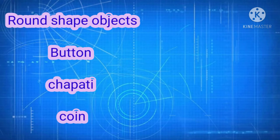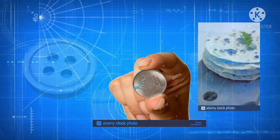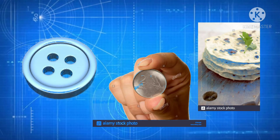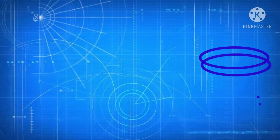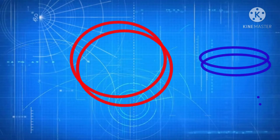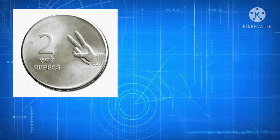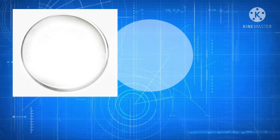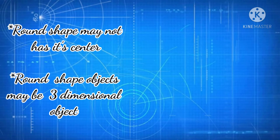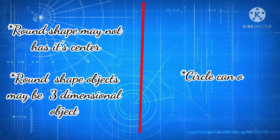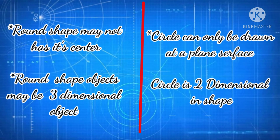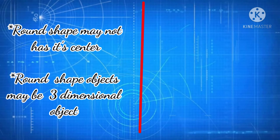Examples of round-shaped objects like a button, chapati, and coin are actually 3D in shape because they have some width, so these objects are cylindrical in shape. Round refers to the front face of that 3D object. When talking about a circle, however, a circle is a 2D shape — it is always 2D and can only be drawn on a plane surface.